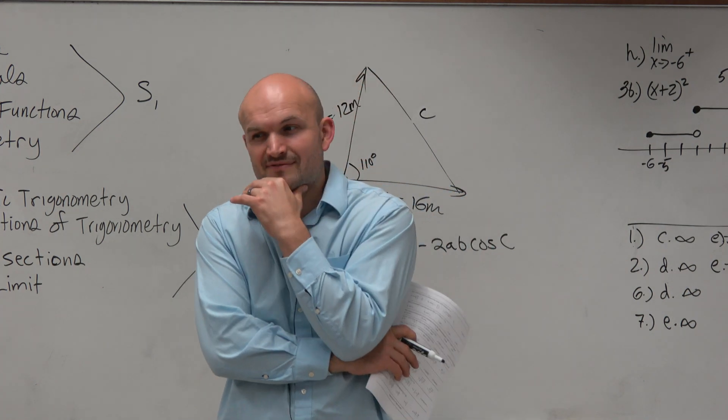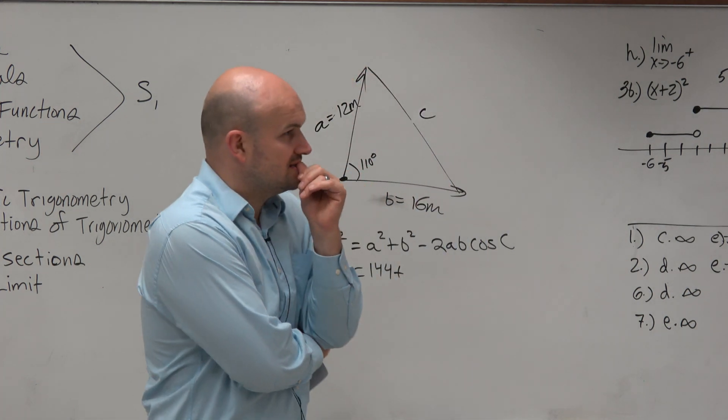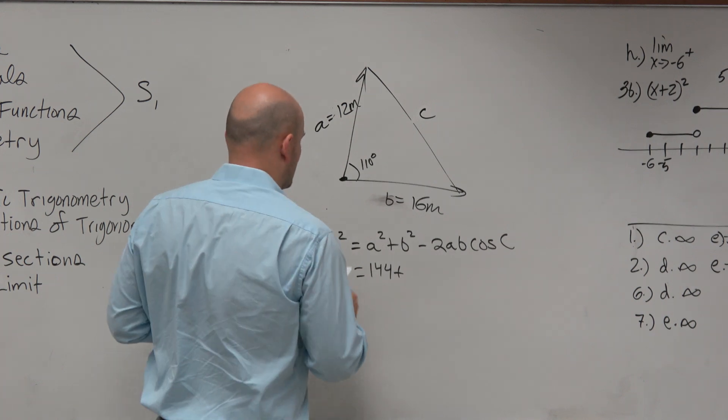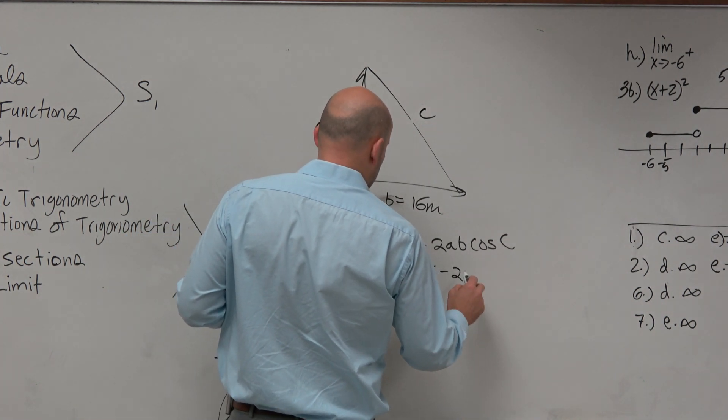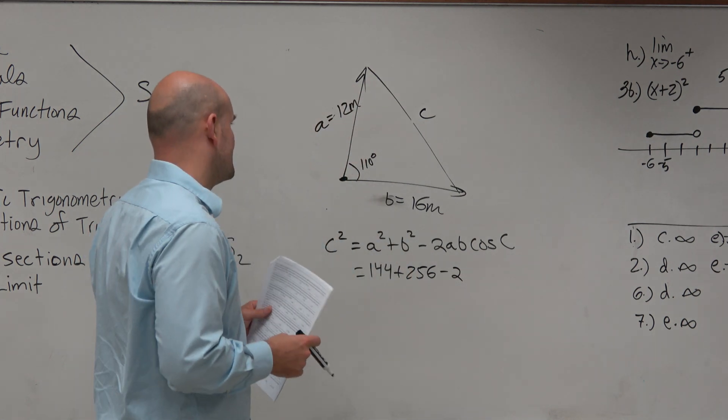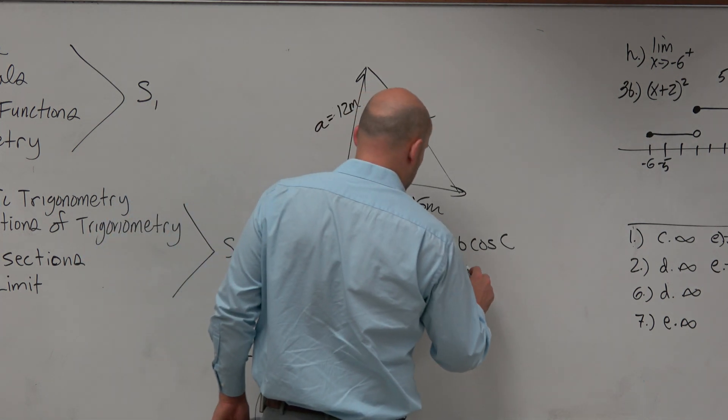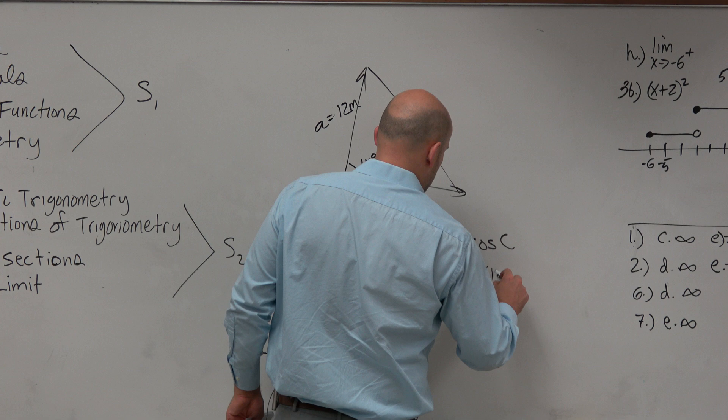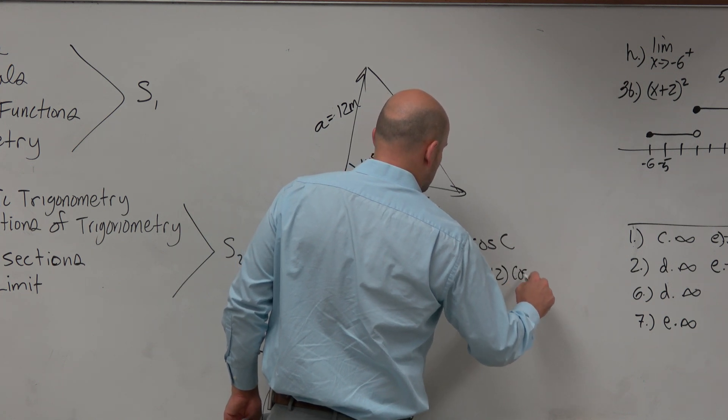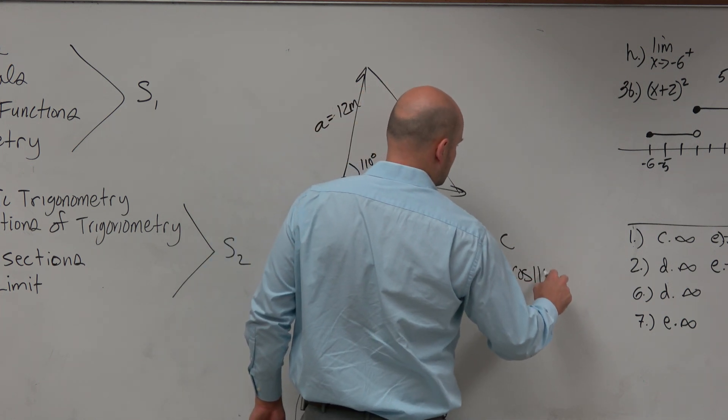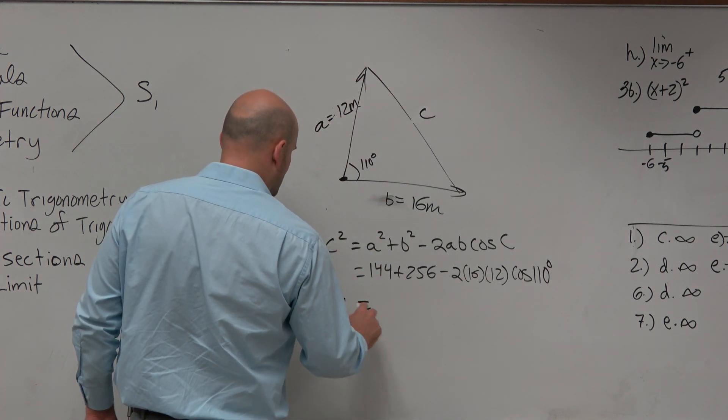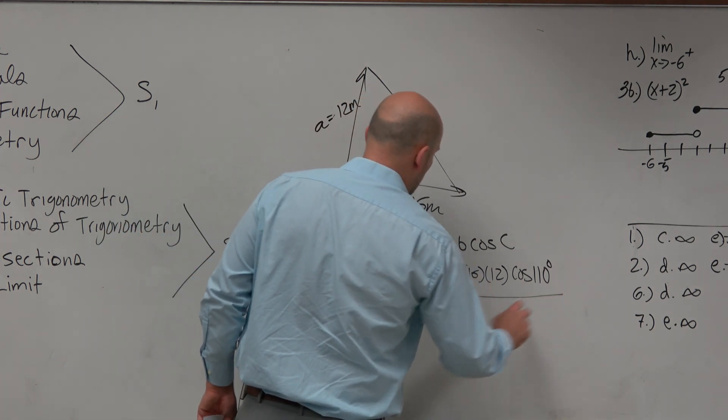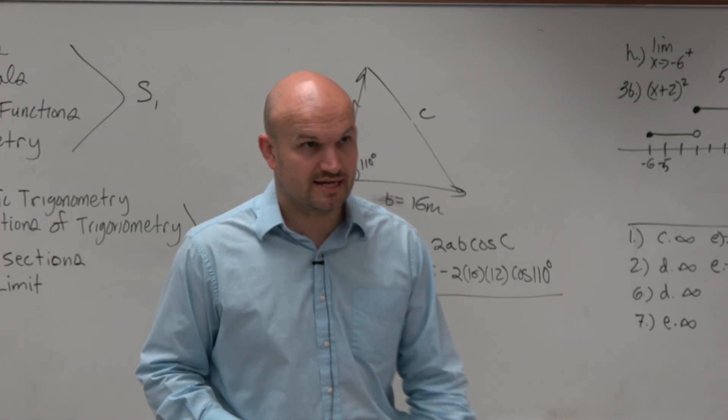A squared is, I'm going to do this in my head because I'm pretending I'm taking the exam. That would be 144 plus b squared, 16 times 16, which is 256, minus 2 times 16 times 12 times the cosine of 110. I am going to take C as going to be the square root of all of that. So I'm going to go ahead and take a calculator.